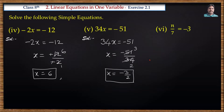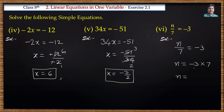Next problem: n by 7 is equal to minus 3. We need n value. Here 7 is the denominator on the left side, so we multiply both sides by 7. n is equal to minus 3 into 7, so n is equal to minus 21.